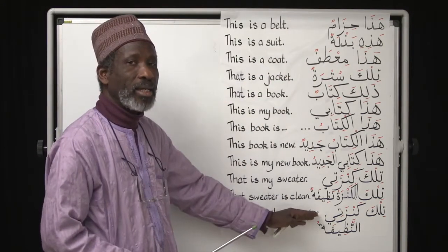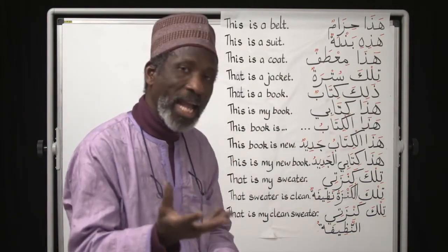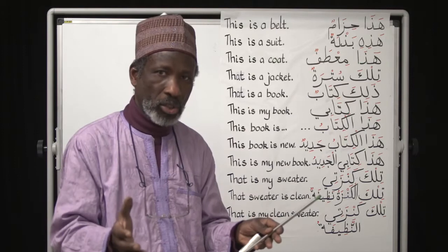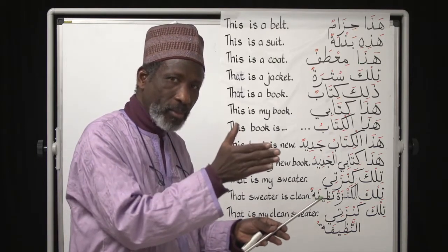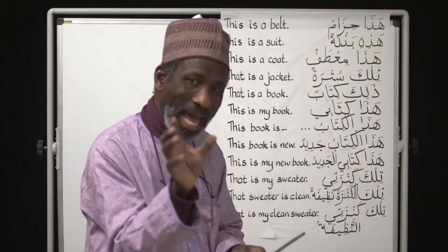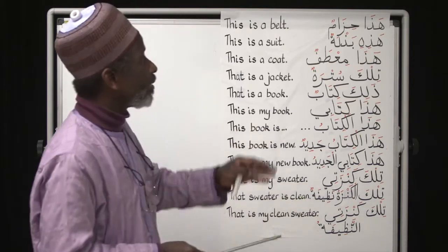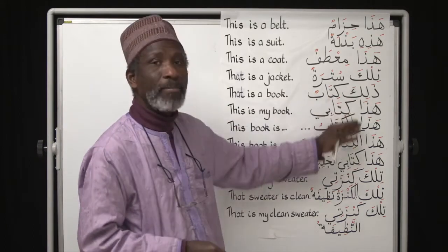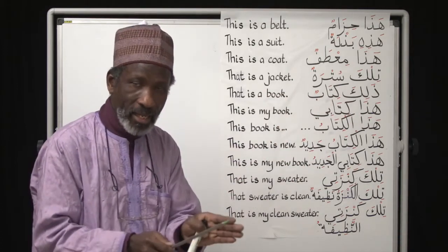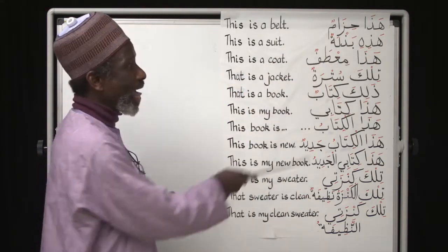The structure is already there — this is just an additional element. That is the system I will be following with you: each section, each step, I give you a little bit extra to add to the already established structure, one step at a time. Try not to destroy the structure — keep it as it is and remember how the new items fit in. These demonstrative pronouns come at the beginning: 'this is,' 'that is' — at the beginning, then the noun, then the rest.